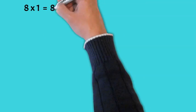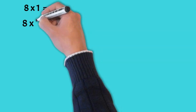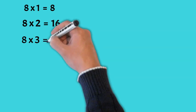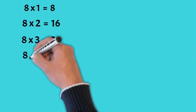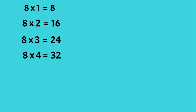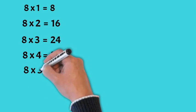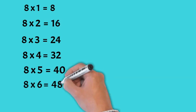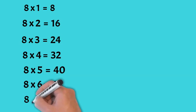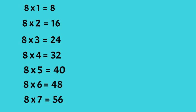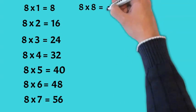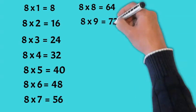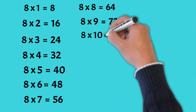Eight times one is 8. Eight times two is 16. Eight times three is 24. Eight times four is 32. Eight times five is 40. Eight times six is 48. Eight times seven is 56. Eight times eight is 64. Eight times nine is 72. Eight times ten is 80.